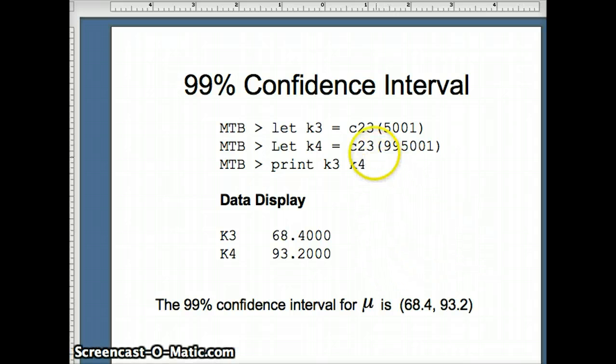So here's our syntax. I'm going to say let K3, Minitab uses K for constants, be C23 number 5001. Let K4 equal C23 number 995,001. And then we're going to look at K3 and K4. The numbers are 68.4 to 93.2. And indeed, you will notice our 99% confidence interval is substantially bigger than the 95% confidence interval, which we would expect.